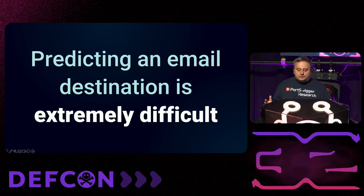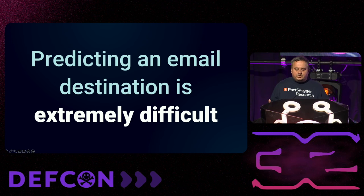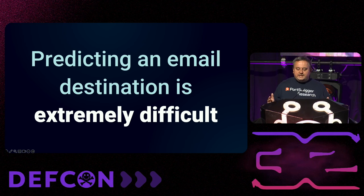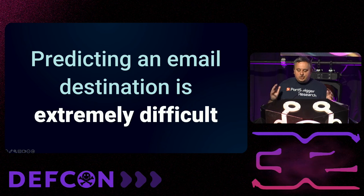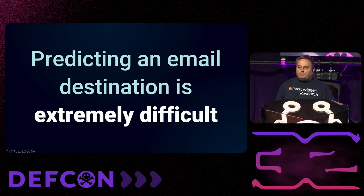Everyone knows that URL parser discrepancies are critical, as they can lead to SSRF, path traversal, and other security issues. Using an email domain for access control makes email address parser discrepancies critical too. Predicting which domain an email should be routed to should be simple, but it's actually ludicrously difficult, even for valid RFC-compliant addresses.